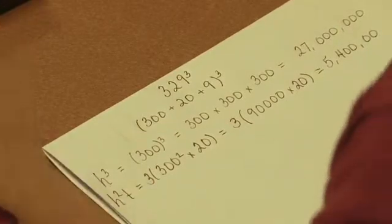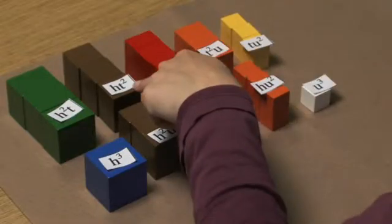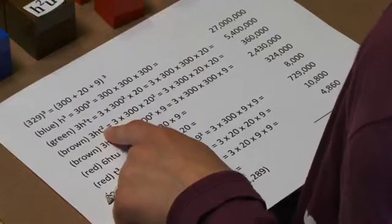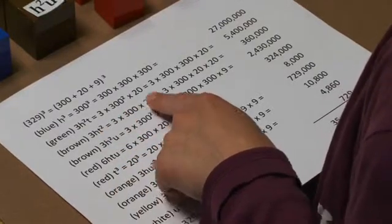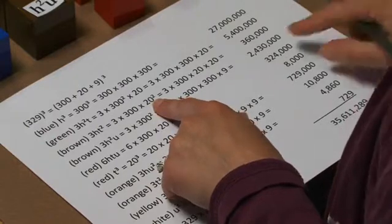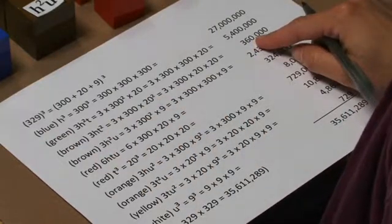So our next one would be the brown group. We would have 3 of the 100 times 10 squared. That would be 3 times 300 times 20 squared. And our value for that would be 360,000.